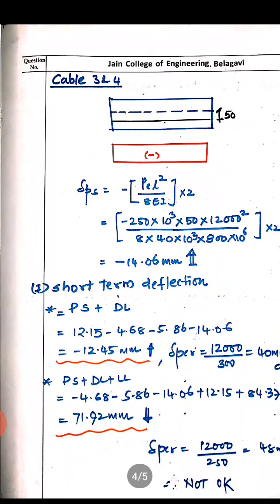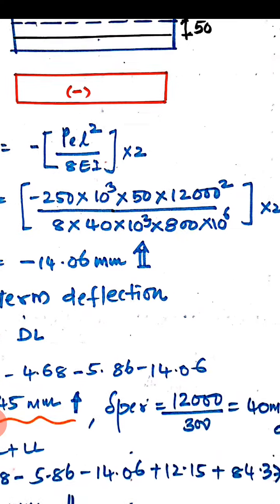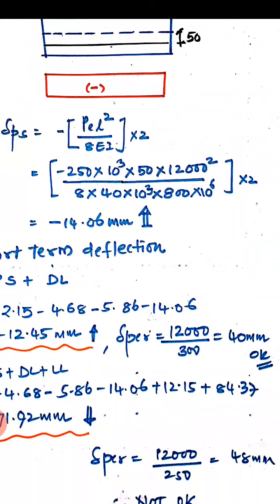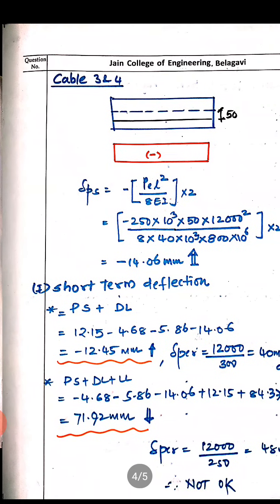For the first case — pre-stress plus dead load — we sum all cable contributions: −4.68 (cable 1) − 5.86 (cable 2) − 14.06 (cables 3 & 4) + 12.15 (dead load) = −12.45 mm (upward). The permissible deflection per code for pre-stress plus dead load only is L/300 = 12000/300 = 40 mm, so the deflection is within the permissible limit.